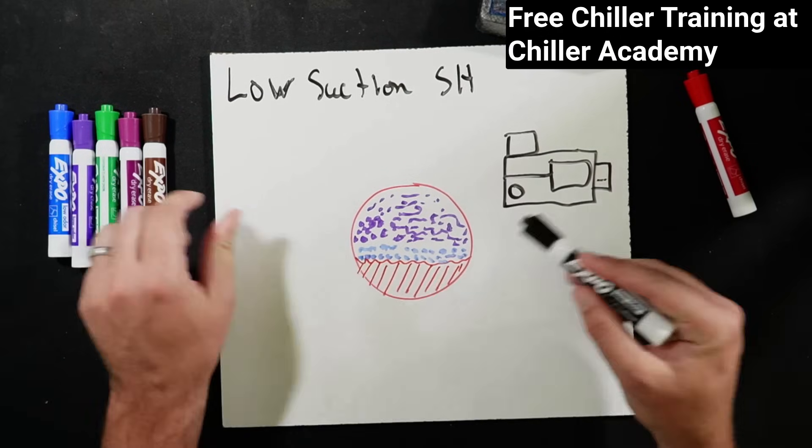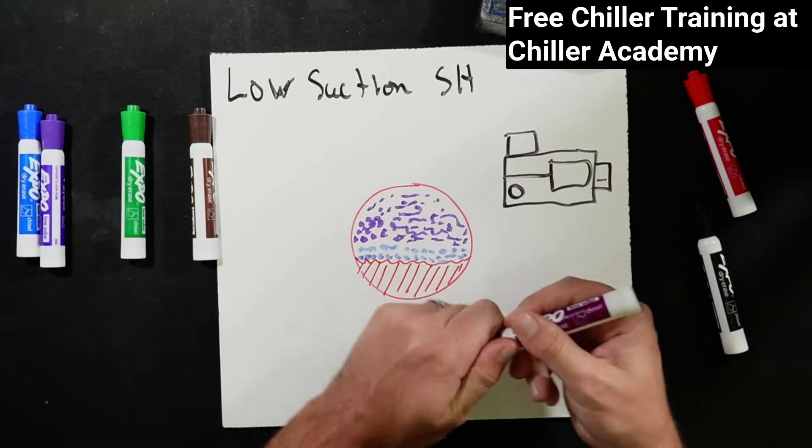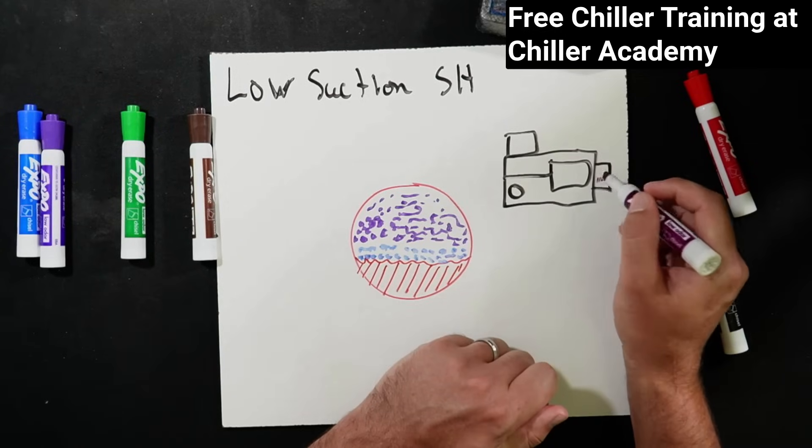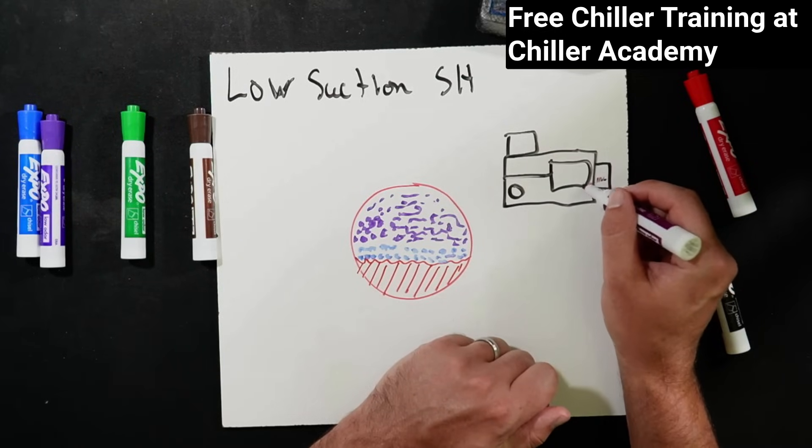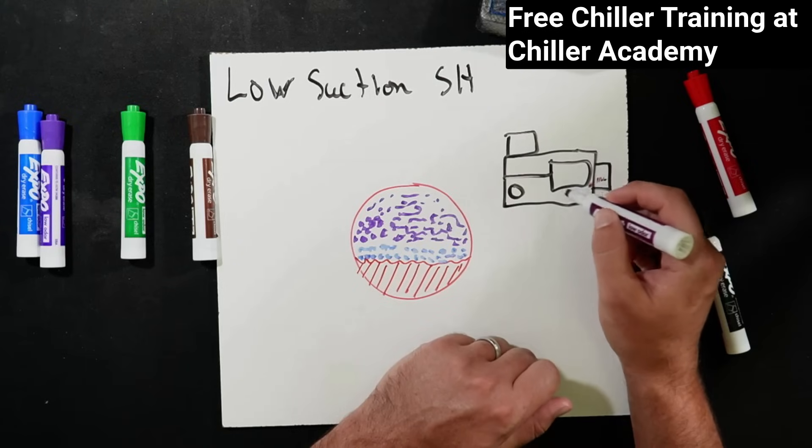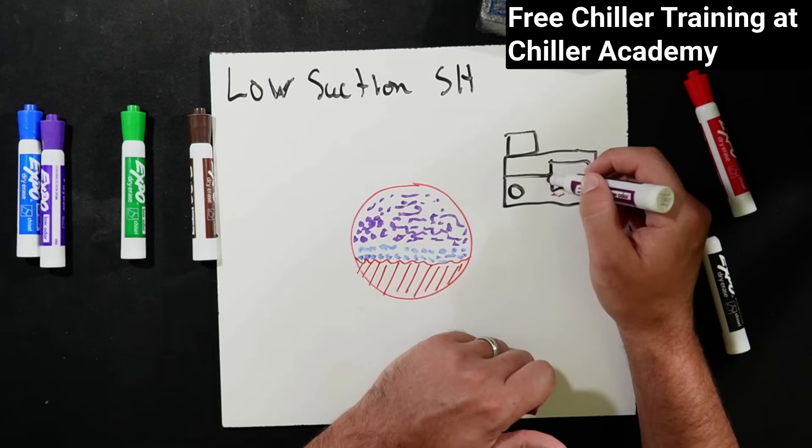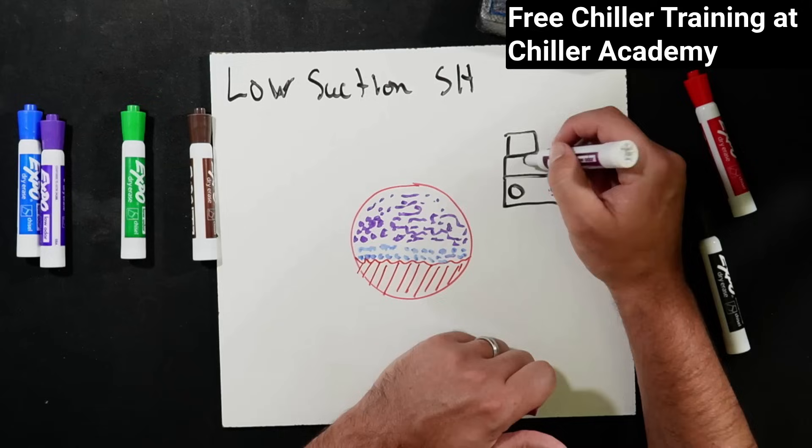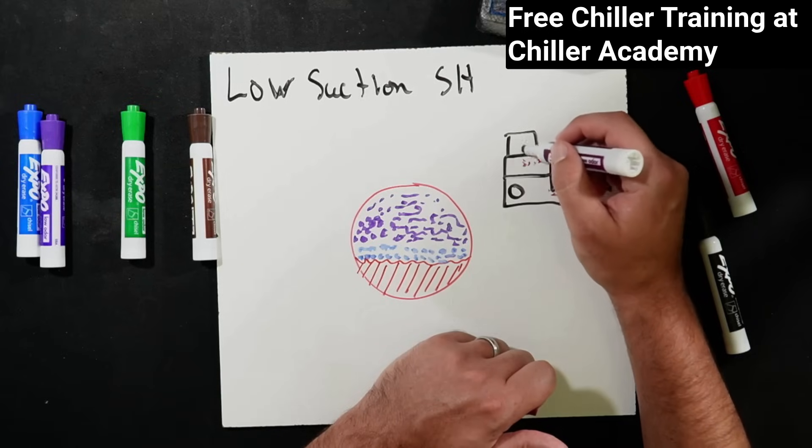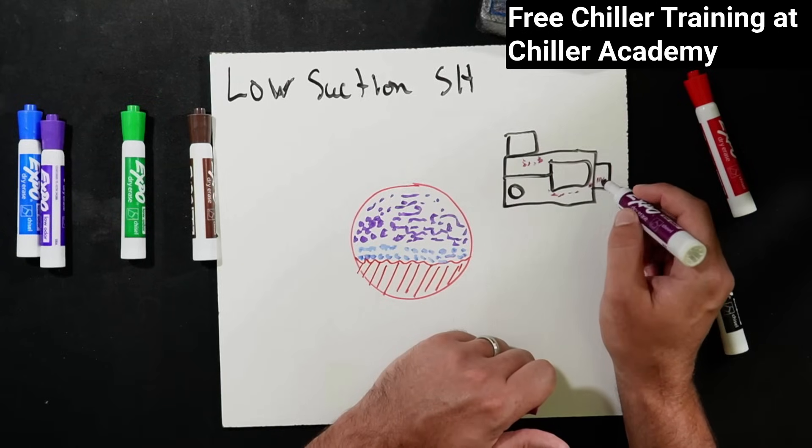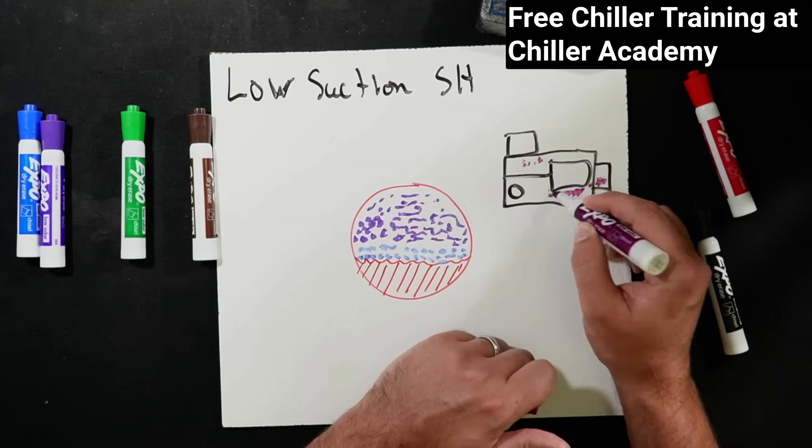So as that liquid refrigerant comes in, I should probably do a different color. We are going to see it come into the bottom of the suction line is going to go through the stator and motor because that's part of how these compressors are cooled. And then if it was a gas, then it would get just drawn up as a vapor up into our head, but that's not what's going to happen with this liquid refrigerant.